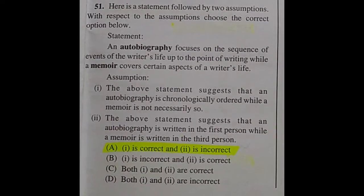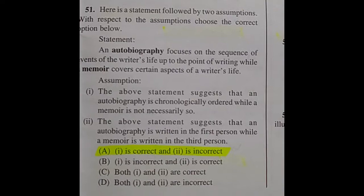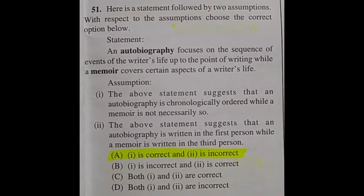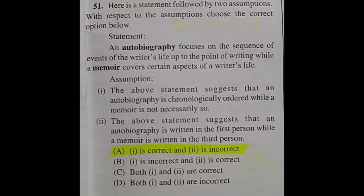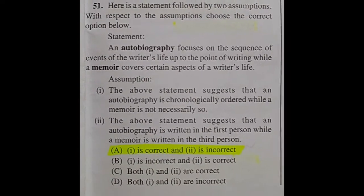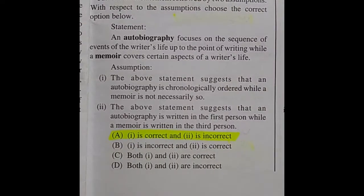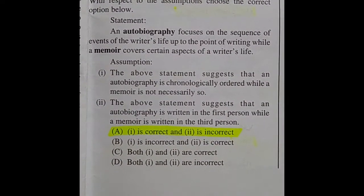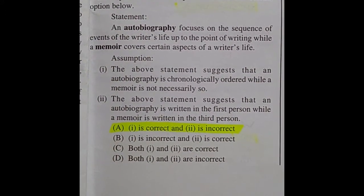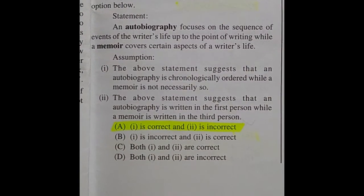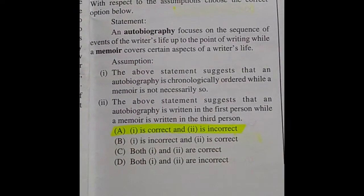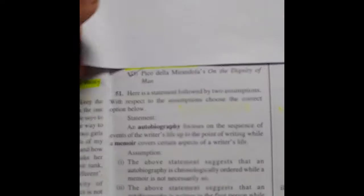Question 51: Statement — 'An autobiography focuses on the sequence of events of the writer's life up to the point of writing, while a memoir covers certain aspects of a writer's life.' Assumption 1: the above statement suggests that an autobiography is chronologically ordered while a memoir is not necessarily so. Assumption 2: the above statement suggests that an autobiography is written in the first person while a memoir is written in the third person. The right answer is option A: Assumption 1 is correct and Assumption 2 is incorrect.